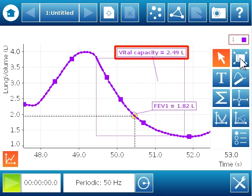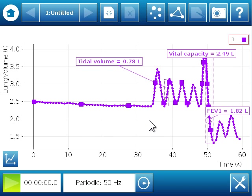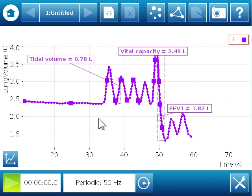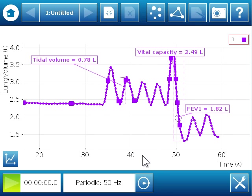I can use my auto scale button to return to the graph that will show the best view of my data. And from here, I can close my graph tools and manually adjust the graph to show the values of interest.